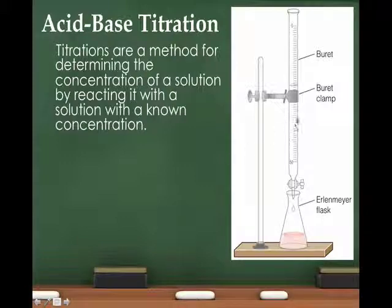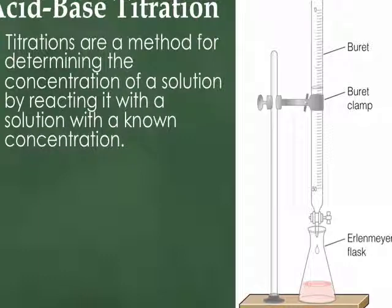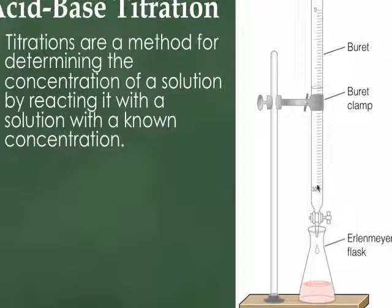When setting up a titration, we use a burette held onto a ring stand with a burette clamp, and an Erlenmeyer flask underneath. If you remember when we did the lab figuring out whether Sprite or 7-Up was the stronger acid — it's the same type of setup, just using more accurate glassware instead of counting drops. Whatever you're trying to find the concentration of goes into the flask. The solution you know the concentration of goes into the burette — that's called the titrant. We use an indicator, usually phenolphthalein, just like with the 7-Up and Sprite lab.